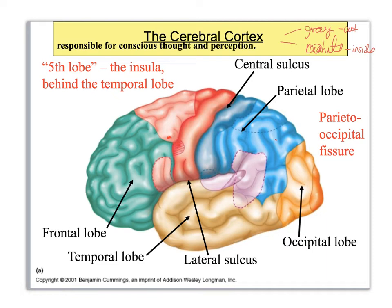The cerebral cortex — the gray matter — is the first thing you see when you cut open a head and rip open the dura mater. What you want to do is put your hand on your forehead. Right behind your forehead is your frontal lobe. I wrote 'eyes' here to help you get oriented, so above your eyes, behind your forehead, is the frontal lobe.